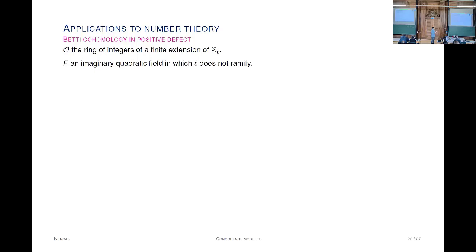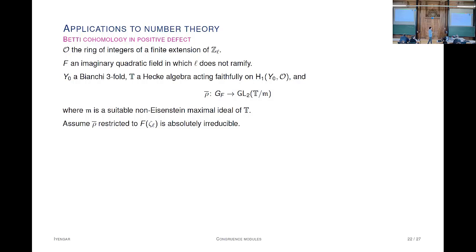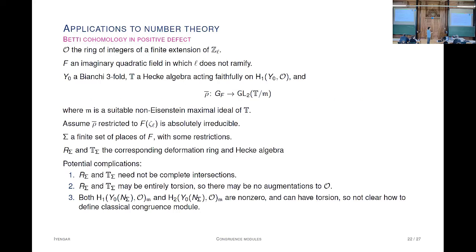I promised two new R equal to T theorems, and this is the first one. You fix some ring of integers in a finite extension of Z_l, where l is a prime, and F is some imaginary quadratic field in which l does not ramify. You fix a Bianchi threefold and a Hecke algebra acting faithfully on the first Betti cohomology of the associated 3-manifold. You fix a representation of the Galois group of F, where M is some suitable non-Eisenstein ideal of the Hecke algebra, assuming absolutely irreducible, and you fix a finite set of places in F with some restrictions.